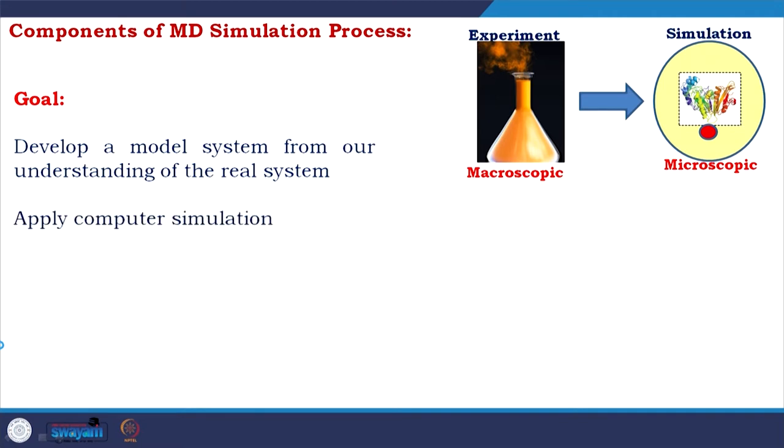You have an experimental system, you develop a model system, then you apply computer simulation. For a long time people have been dreaming to develop model systems out of experimental systems, but the dream started coming true with the advent of computers because now you have huge ability to process data. You can assume a lot of hypotheses and do calculations accordingly — that is where computer simulation comes in.